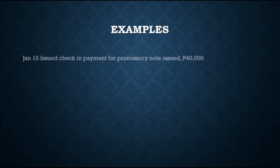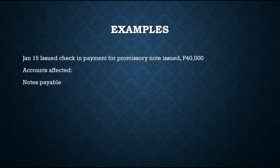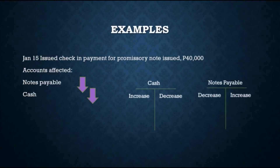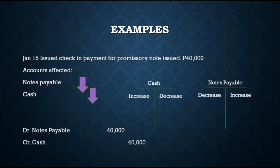For the transaction on January 15, a check was issued in payment for the promissory note amounting to $40,000. The accounts affected are notes payable and cash. Notes payable will decrease since the note was paid, and cash will also decrease. Since cash decreased, it goes on the credit side. Since notes payable decreased, it goes on the debit side. The journal entry is: debit Notes Payable $40,000 and credit Cash $40,000.